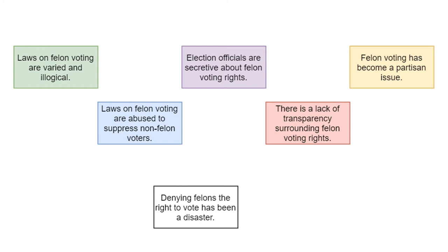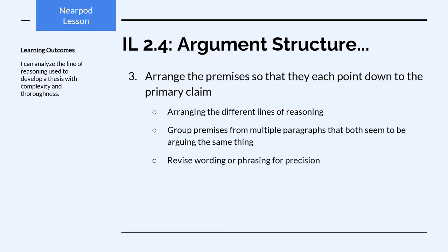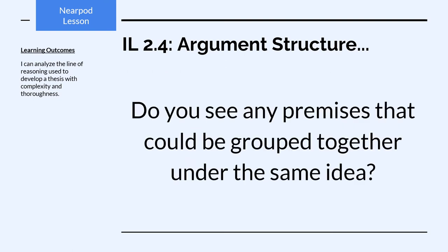We've added our last two premises: that there is a lack of transparency surrounding felon voting rights, and that felon voting has become a partisan issue. Those five premises all work to support the primary claim that denying felons the right to vote has been a disaster. Next, we want to arrange these premises so they each point down to the primary claim — this is where we figure out what our actual lines of reasoning are. We also want to group any premises from multiple paragraphs that seem to be arguing the same sort of thing, since they'll belong to the same line of reasoning.